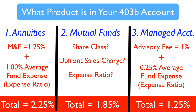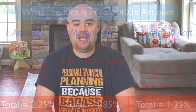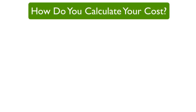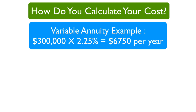So we've broken down the three different types of products and what to expect in fees. Now, how do we turn this into figuring out how much it actually costs you each year? Here are a few examples. If you have $300,000 in your 403B invested in a variable annuity with a two and a quarter percent expense ratio, that comes out to $6,750 per year. This doesn't show up anywhere — it's just being deducted from your investment options on a daily basis, slowly bringing down the performance of your funds throughout the year.